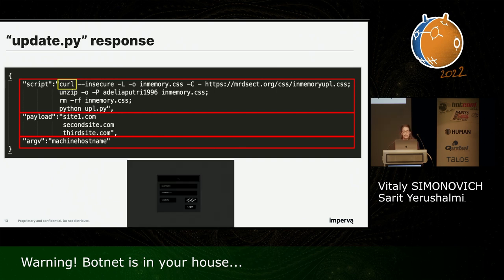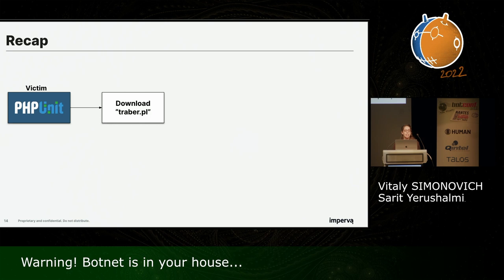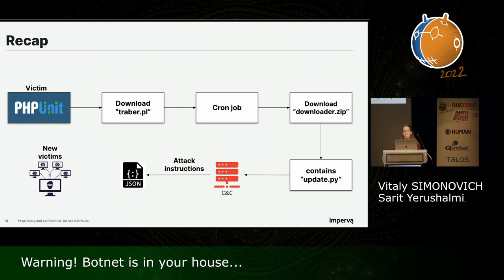We found the login screen of the C&C. Notice the phrase 'Adelia Putri' — we saw it earlier in the downloader zip, used as a password to extract the files inside. We'll talk about it later. To recap: a victim is exploited via PHP Unit remote code execution, then downloads the Trapper PL script, which creates a cron job scheduled to run every five minutes to download the downloader zip. This zip contains the update.py script, which communicates with the C&C to receive JSON files — let's call them attack instructions.